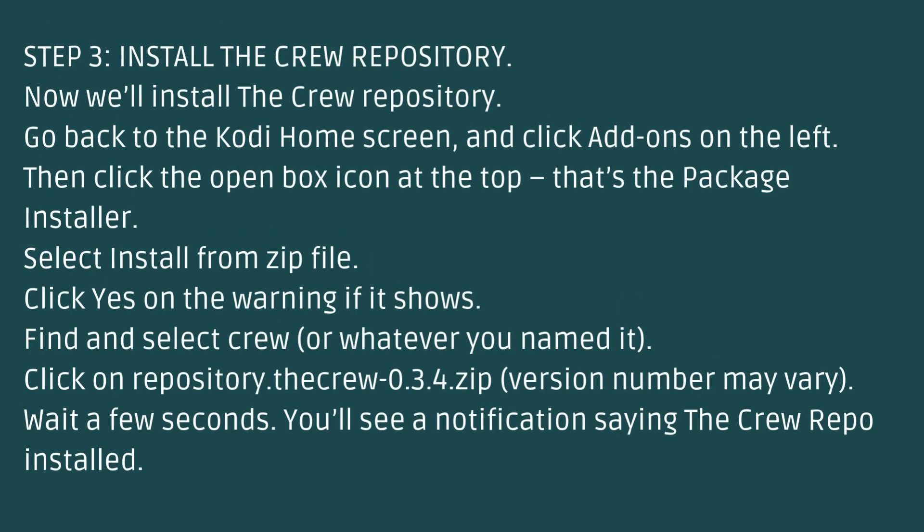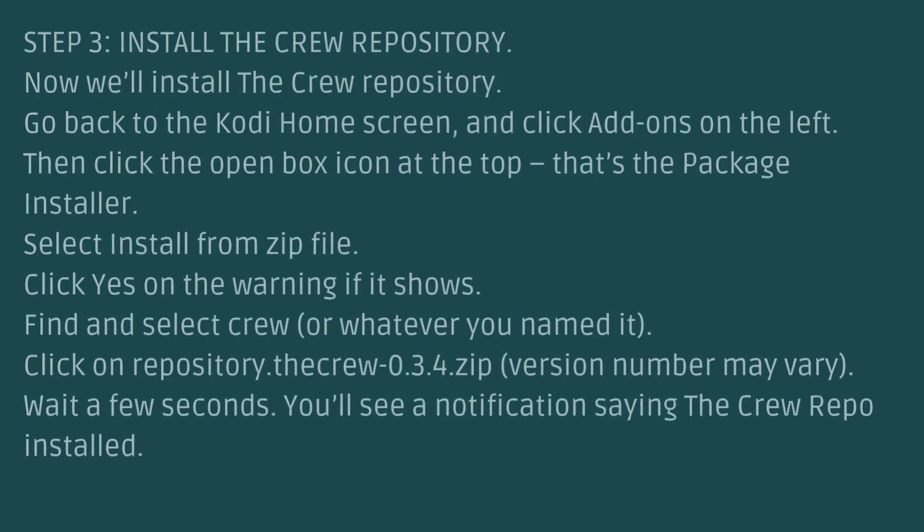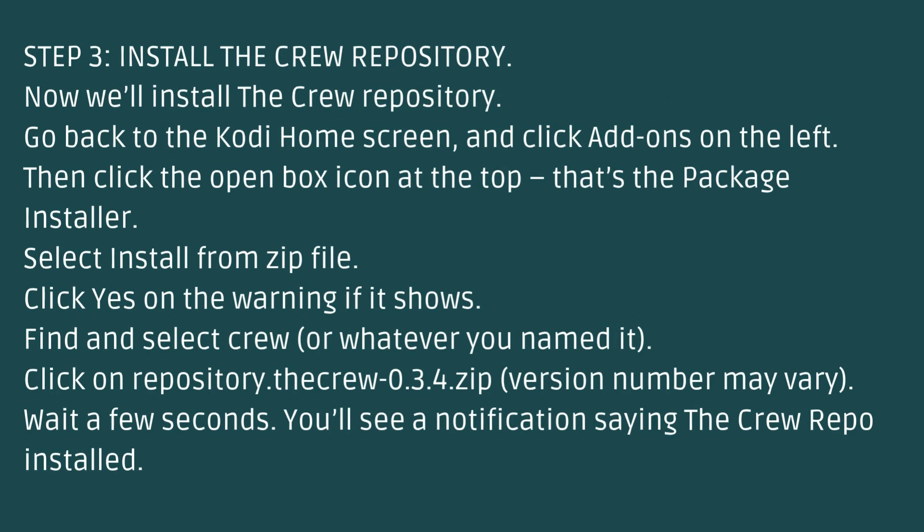Step 3: Install the Crew Repository. Now we'll install the Crew Repository. Go back to the Kodi home screen and click Add-ons on the left. Then click the Open Box icon at the top — that's the Package Installer. Select Install from Zip File. Click Yes on the warning if it shows. Find and select Crew, click on Repository.The Crew 0.3.4.zip. Wait a few seconds and you'll see a notification saying the Crew Repo installed.